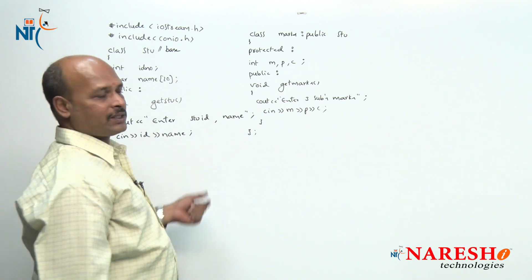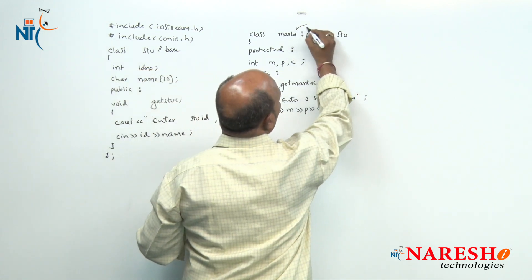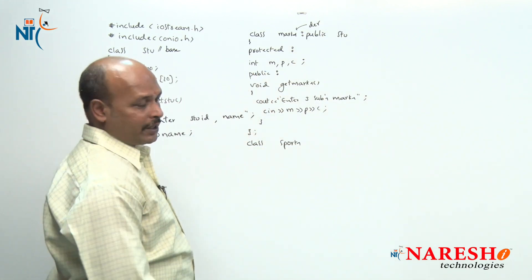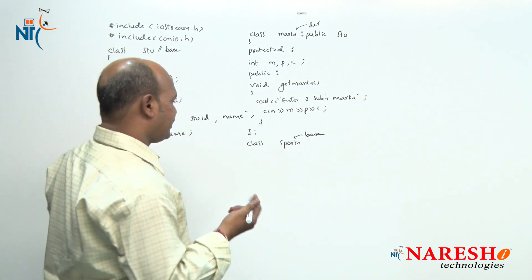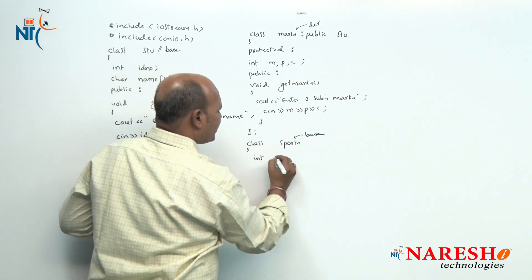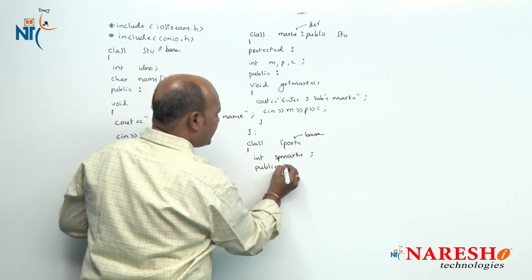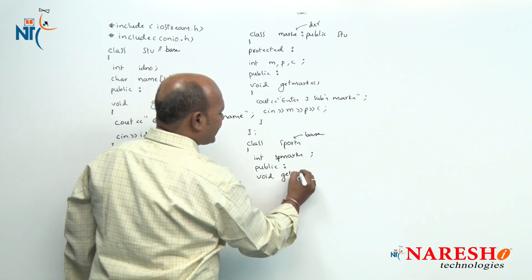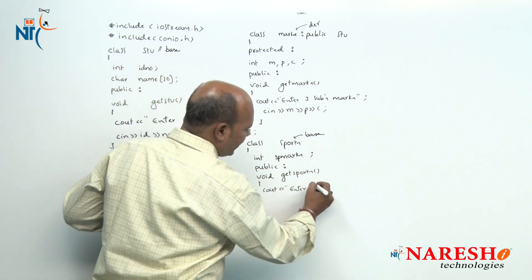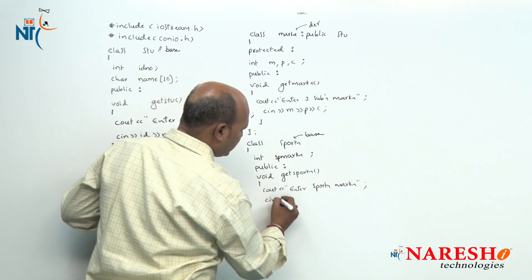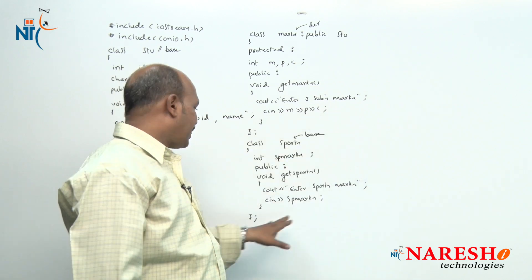Now I am going to declare one more class — class sports. Marks is also one derived class. Class sports is a base class because it is not going to derive from any other class. And here, int sp_marks means sports marks. In public area, void get_sports — it is going to read the sports marks. Cout — enter sports marks — cin sp_marks. Class closed. Here we are reading three subject marks, and here we are reading the sports marks.